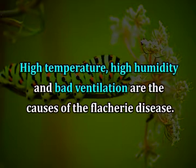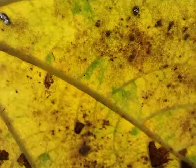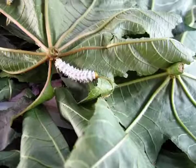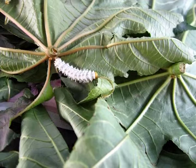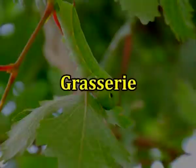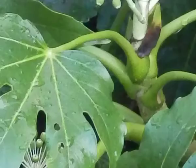Methods to eliminate flacherie: High temperature, high humidity, and bad ventilation are the main causes of flacherie disease. Other causes include dirty leaf, wet leaf, fermented leaf, coarse leaf, overfeeding, and overcrowding. To avoid the disease, fresh castor leaves should be given to the eri worms, and fluctuation in the temperature of the rearing room should be avoided.